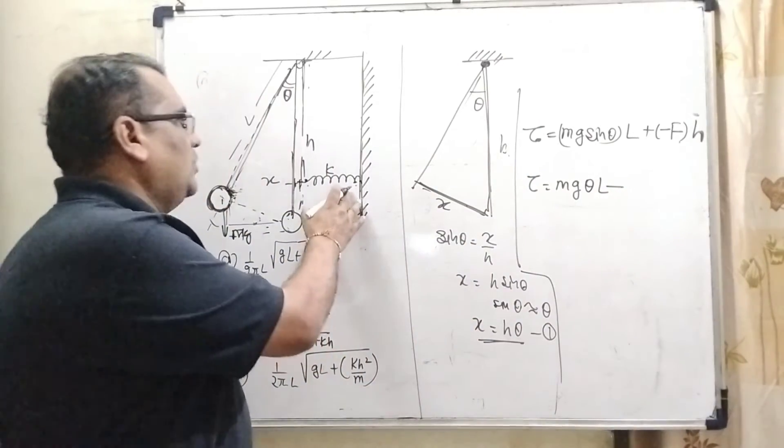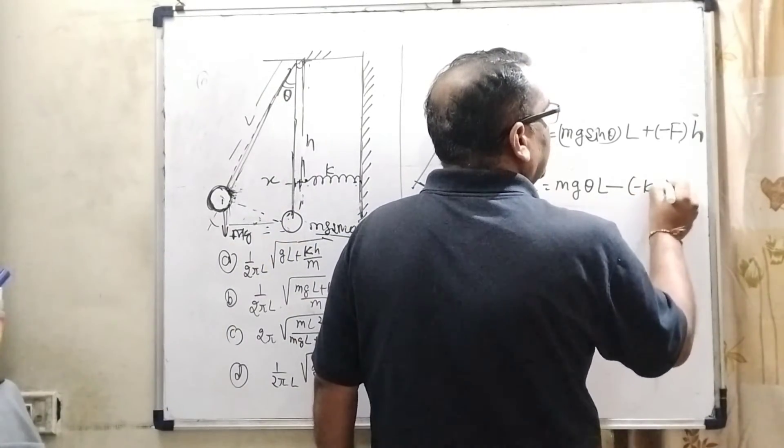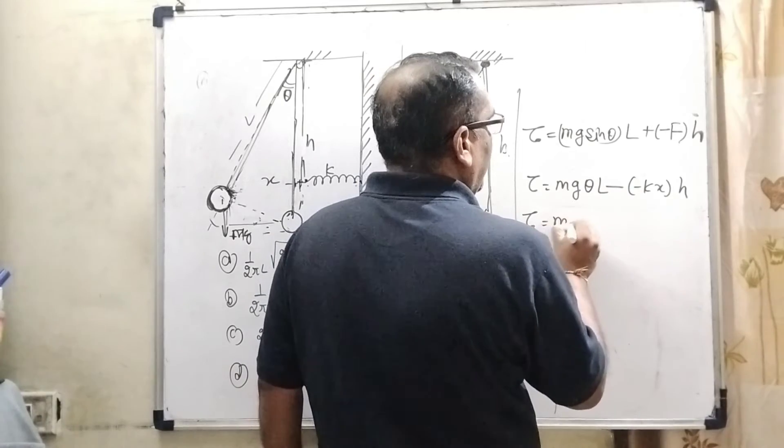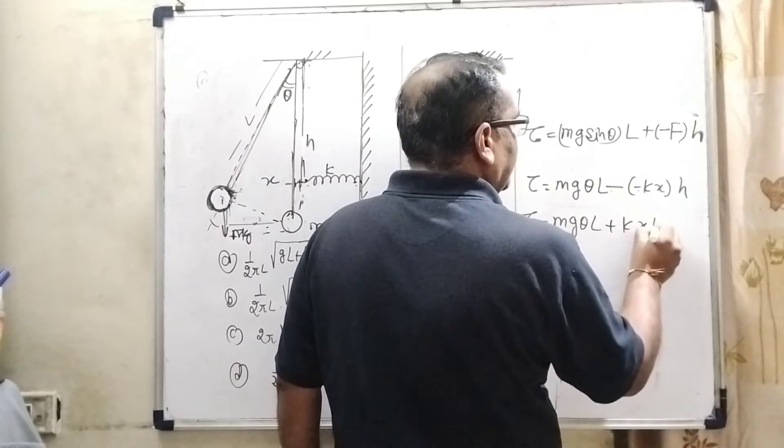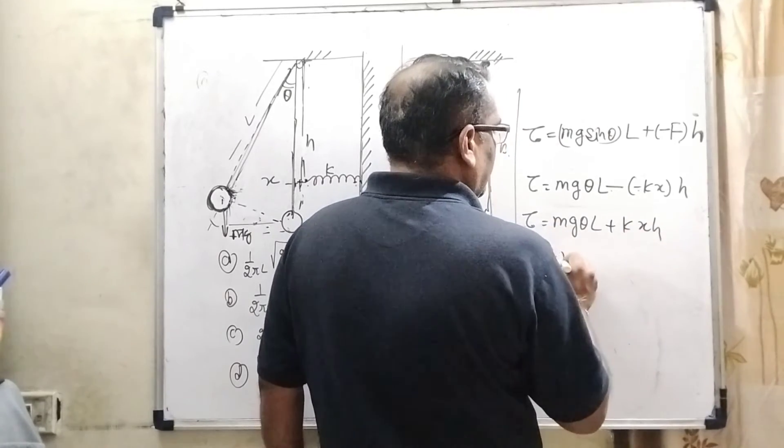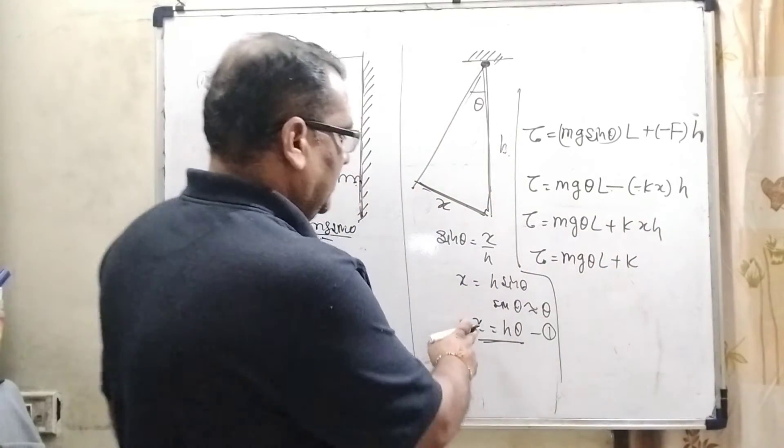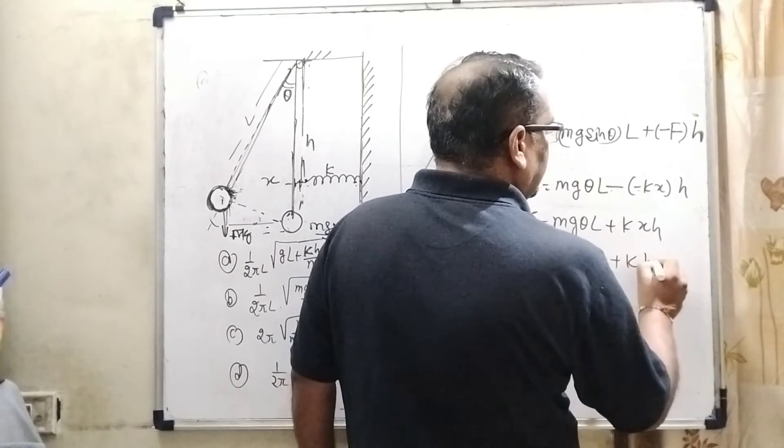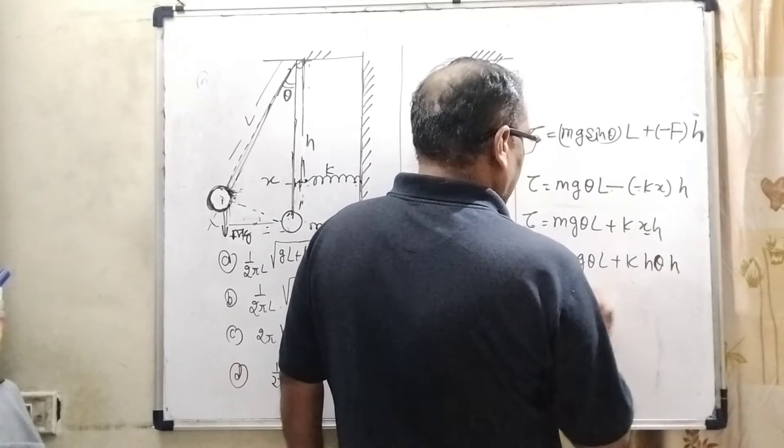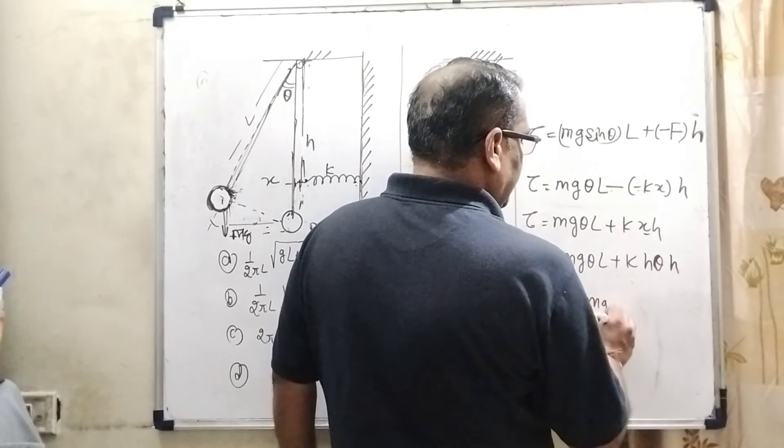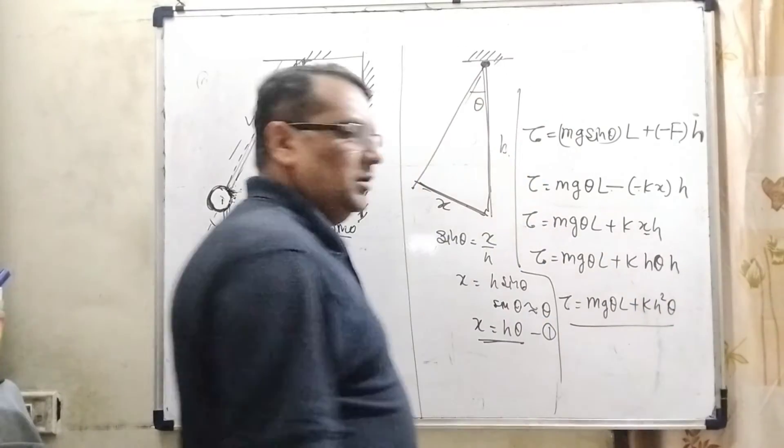Here, what is the F? Restoring force of the spring. So, minus Kx into H. So, tau equal to Mg theta L. And what is the value of X? Here, H theta. So, H theta in the place we have substitute in the place of X. Then tau equal to Mg theta L minus KH square theta.